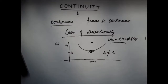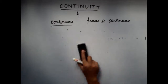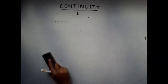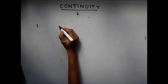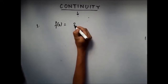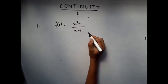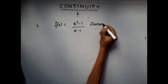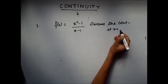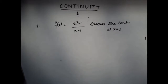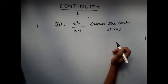So this was a brief concept about continuity of a function. Now let's take one or two examples where we need to check whether the function is continuous at a particular point or not. The first example is f(x) = (x² - 1) / (x - 1), and you need to discuss the continuity at x equals to 1. When given questions like this, you could either draw the graph — since the graph will clearly tell you whether the function is continuous — or you can prove it mathematically.